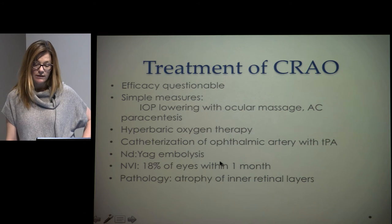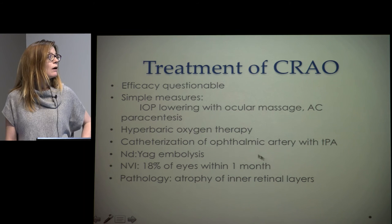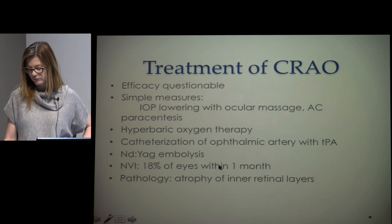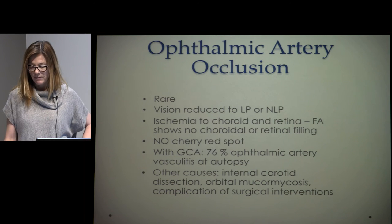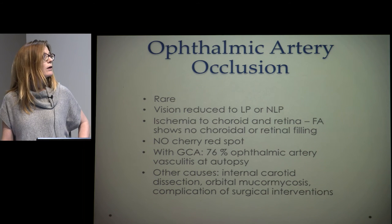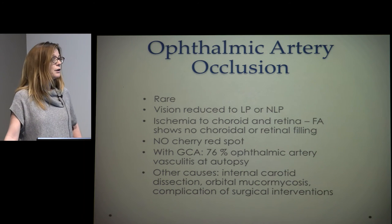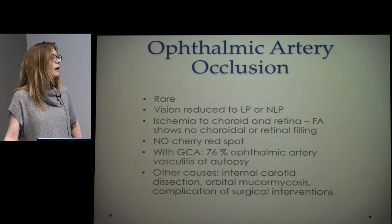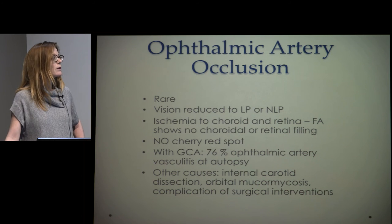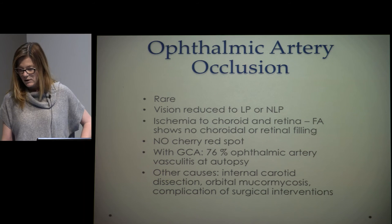Neovascularization after arterial occlusion is less common than after vein occlusion, but if it happens, it occurs more quickly — usually within one to two months. Ophthalmic artery occlusion is rare — I think I've seen it once. Vision will be light perception or NLP; fluorescein shows no choroidal or retinal filling, and there's no cherry red spot. In patients with autopsy-confirmed giant cell arteritis, 76% had ophthalmic artery vasculitis. Other causes include internal carotid dissection, mucor, and surgical complications.